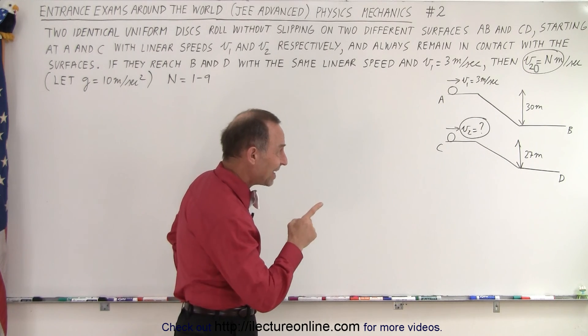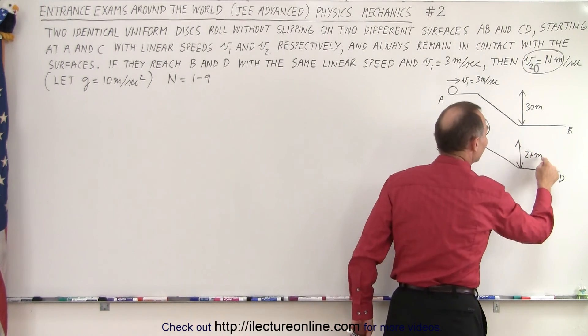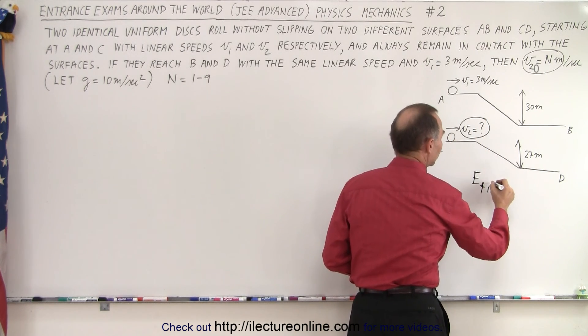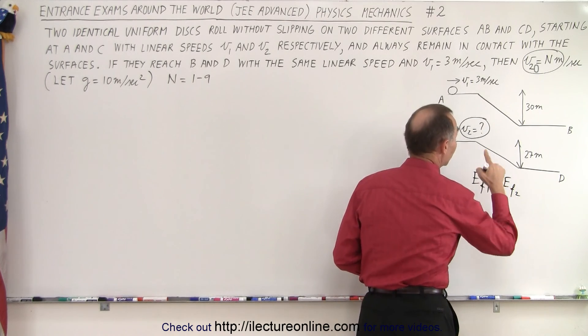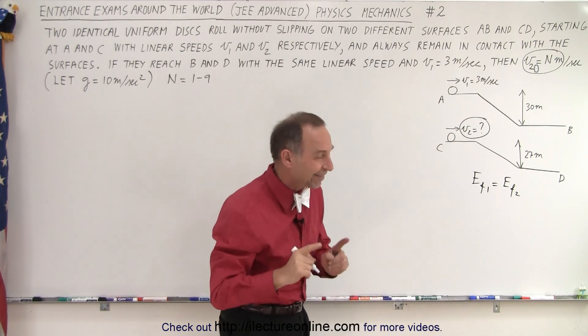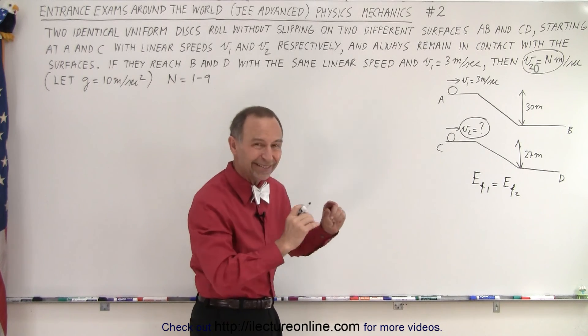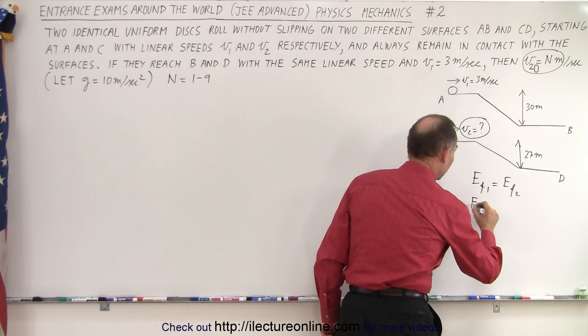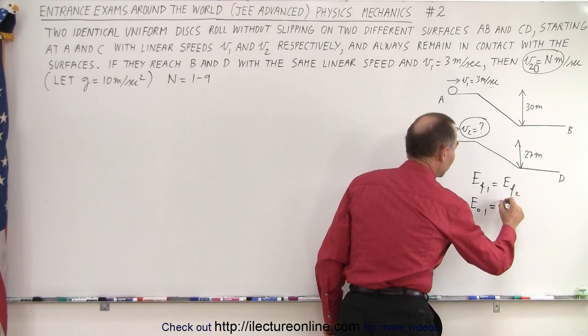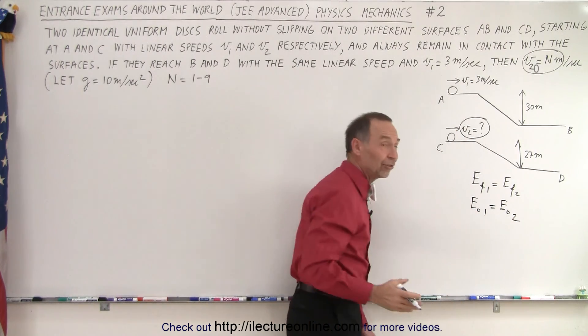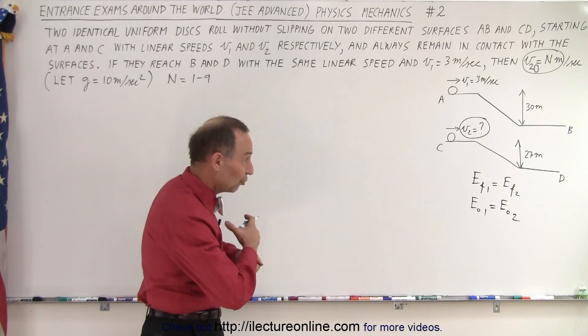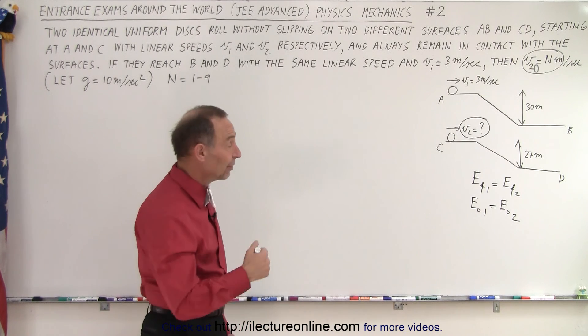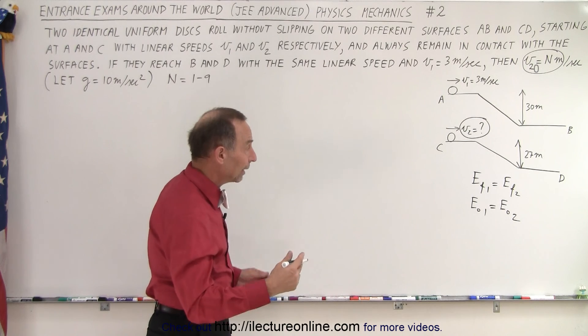What we can say is that at the very end they should have the same final energy. So energy final of the first object must equal energy final of the second object because we're told that they will be moving at the same linear speed when they get down there and they're the same object, same mass, same shape, same everything. Which means that the energy initial of the first object must equal energy initial of the second object, because the initial energy must equal the final energy since there's no energy lost. So what we need to do now is identify what their initial energies are and then equate those to each other.